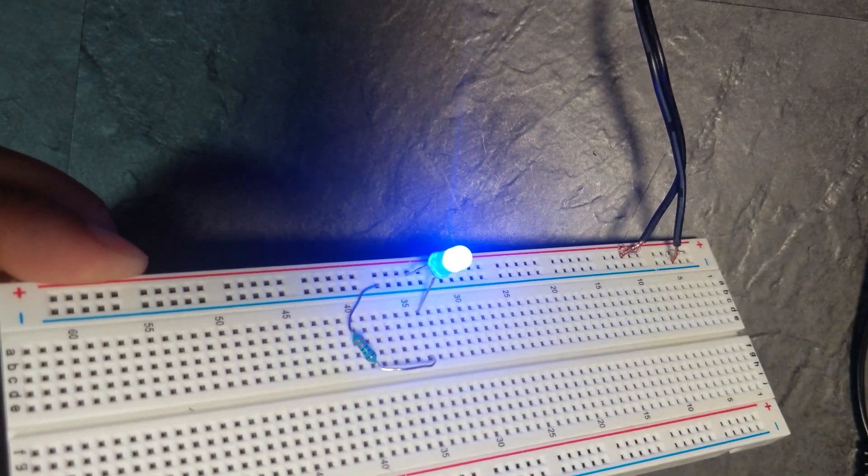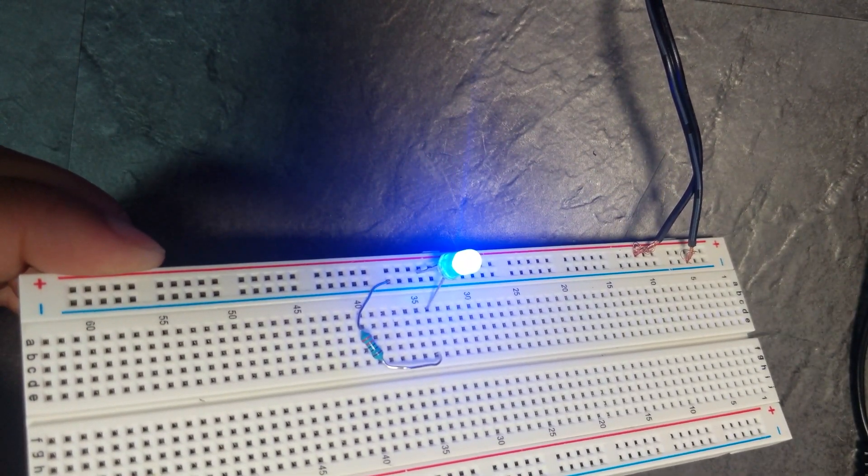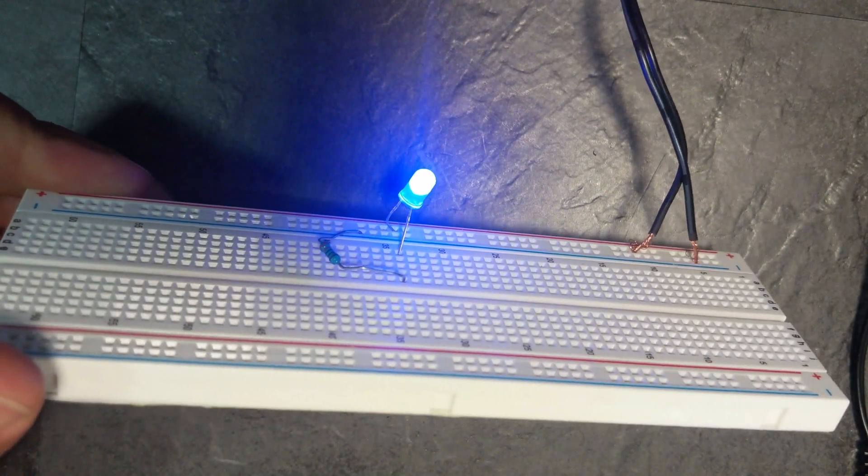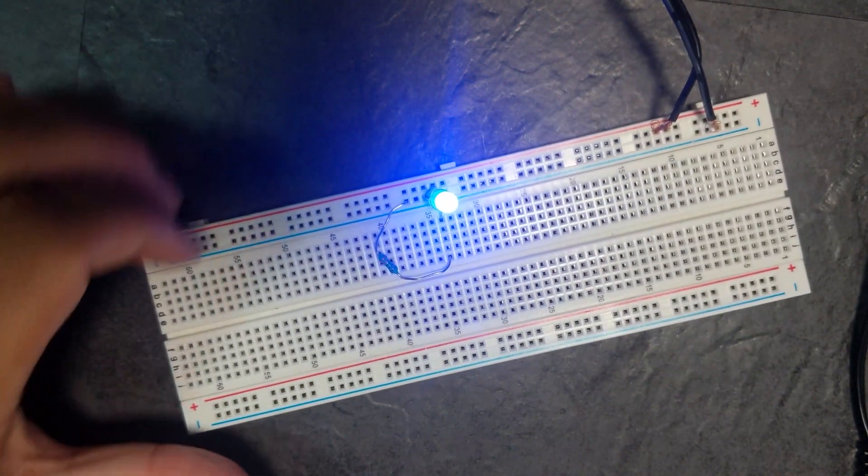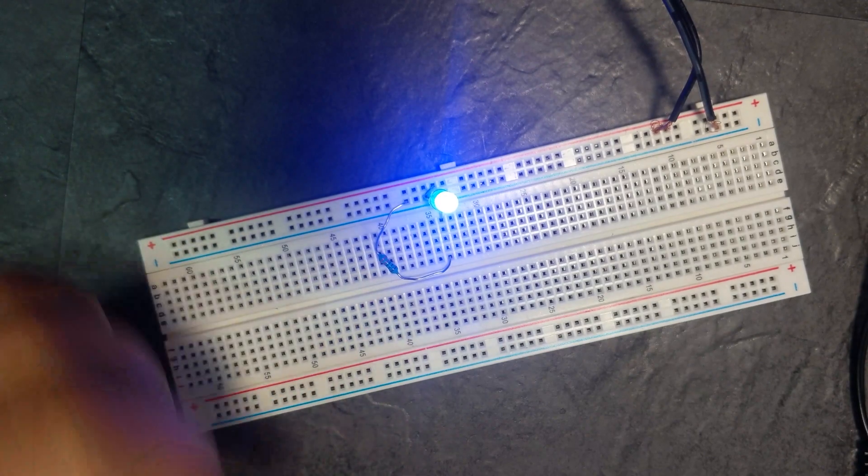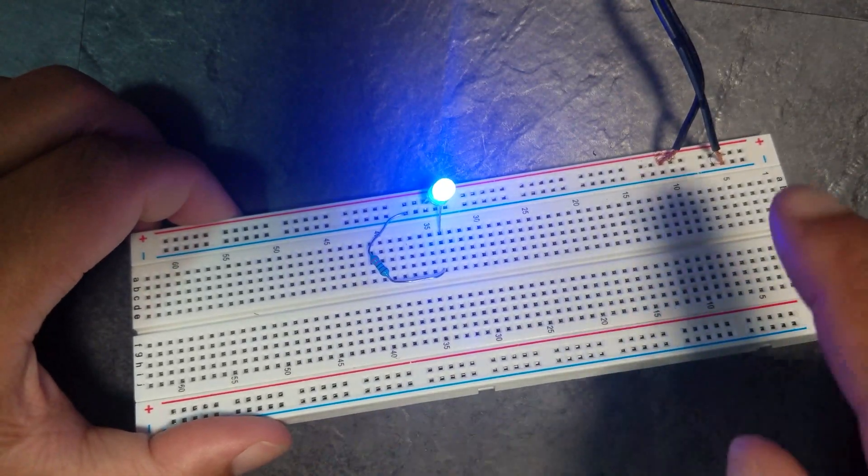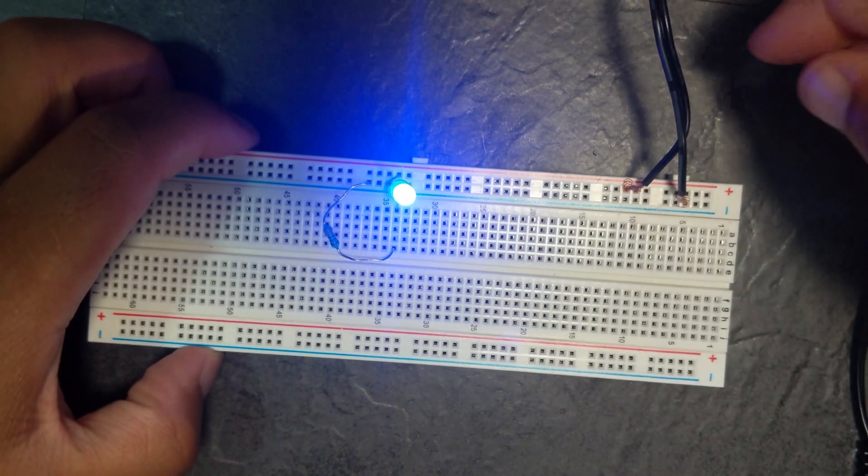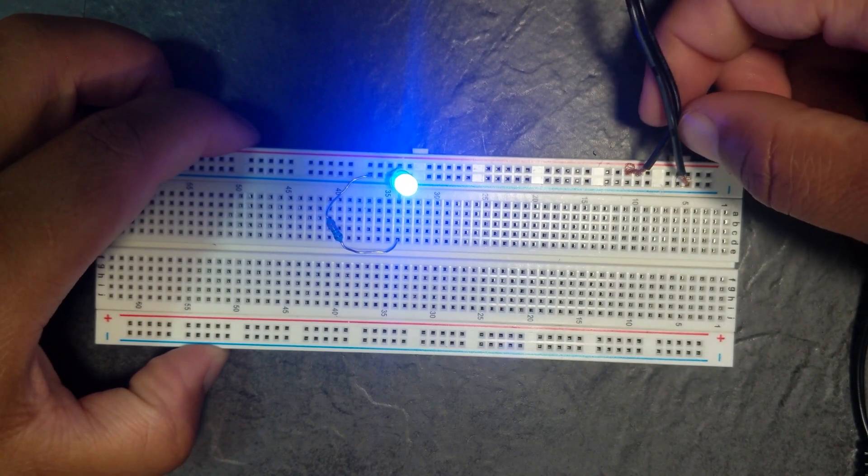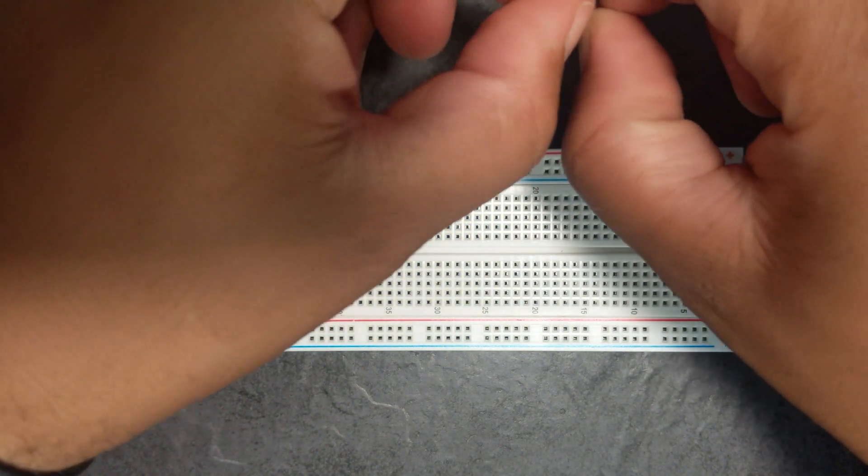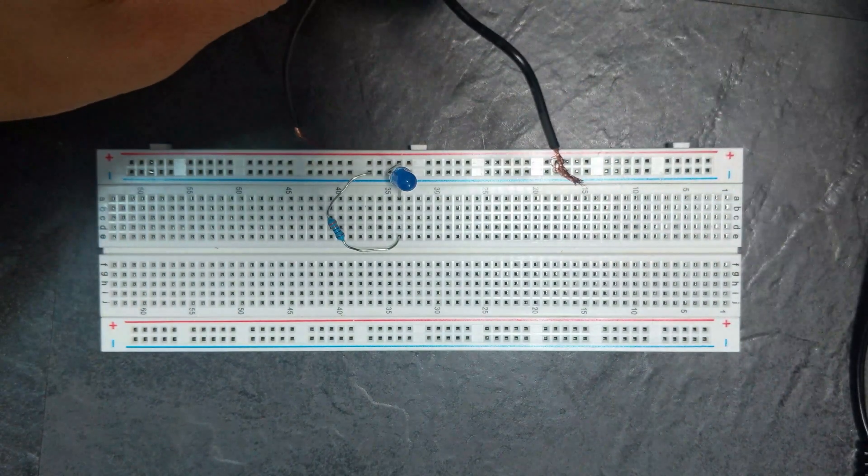So turns out that I've actually plugged these in the wrong way around, but that's cool. There you go, so you can see that you've got a 12 volt power supply powering this LED with the resistor.